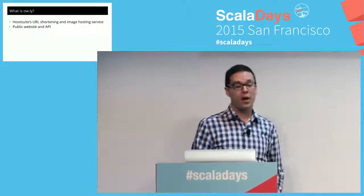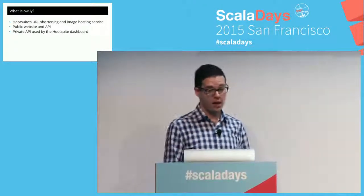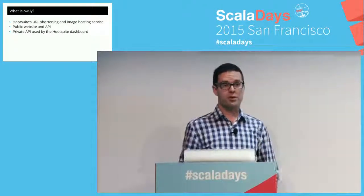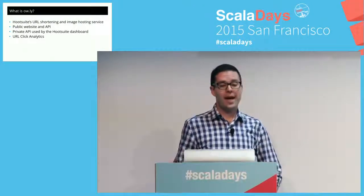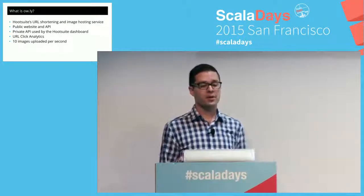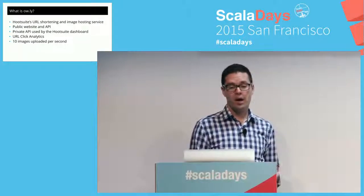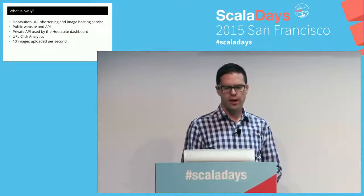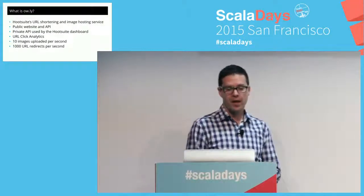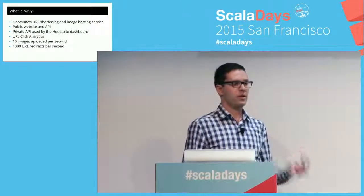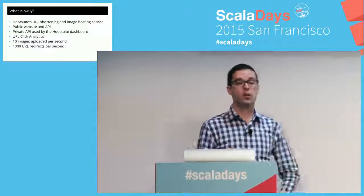Owly has a public website and API, a private API used by the dashboard product to shorten links, and click analytics. Stats: about 10 images uploaded per second, hosted in S3 by us for you for free, and about 4,000 redirects per second — those are the 301 redirects when your short URLs come in, plus creating the click analytics.